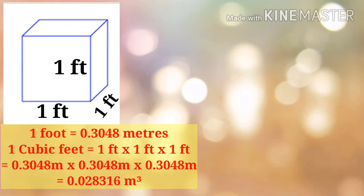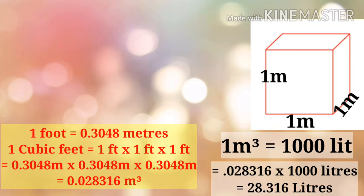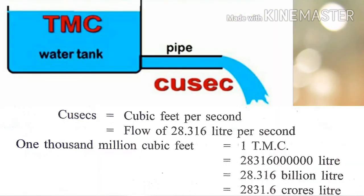Let us consider another cube with length 1 meter, breadth 1 meter, and height 1 meter — that is 1 cubic meter. Its capacity is equal to 1000 liters, similar to a syntax tank or cubic-type tank. So 1 Qsec is equal to 0.028316 × 1000, which is 28.316 liters per second. This is called Qsec.